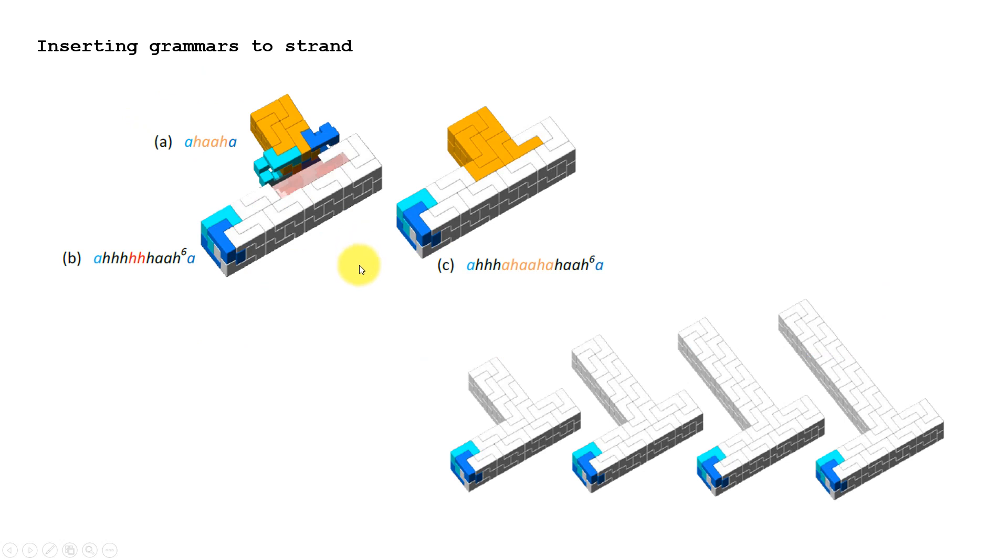We can use fixed ending grammar to insert grammars to a strand. For example, this is a strand defined with this string of concatenations. If we consider these two edges shown in red corresponding to this part, we can always use any alternatives of a fixed ending grammar and plug that SL string into this existing string to make a structure like this. With this way we can create a structure like this.